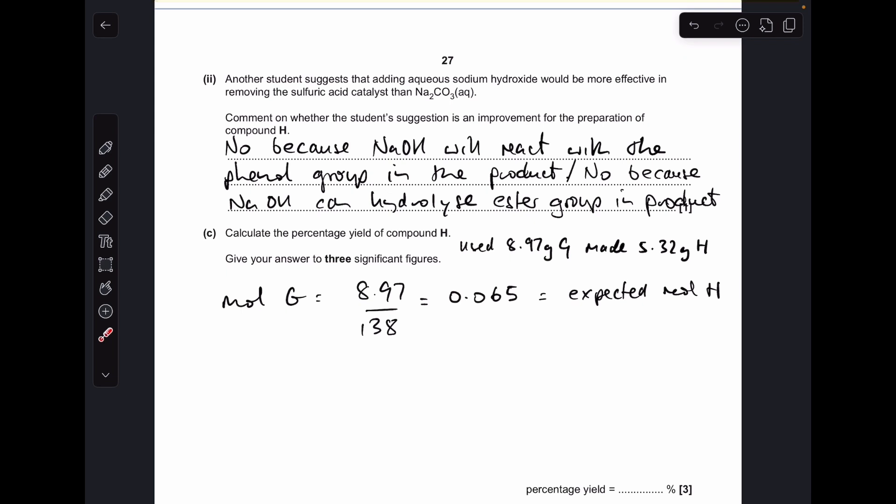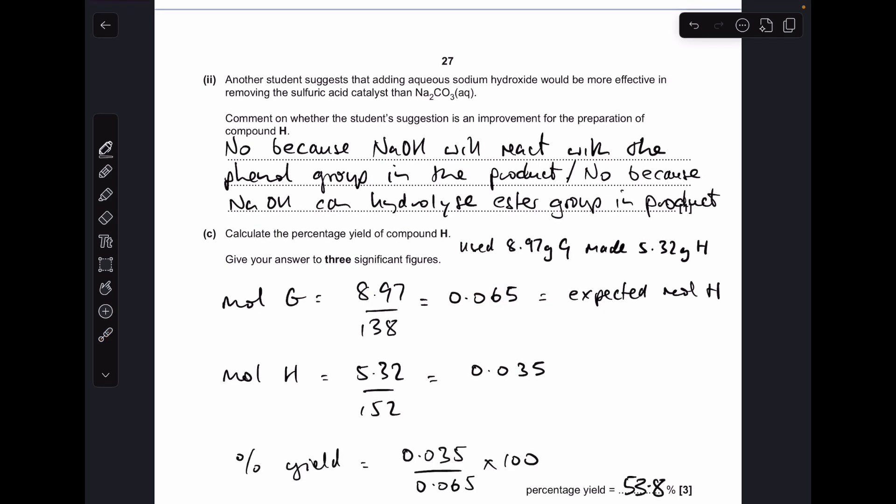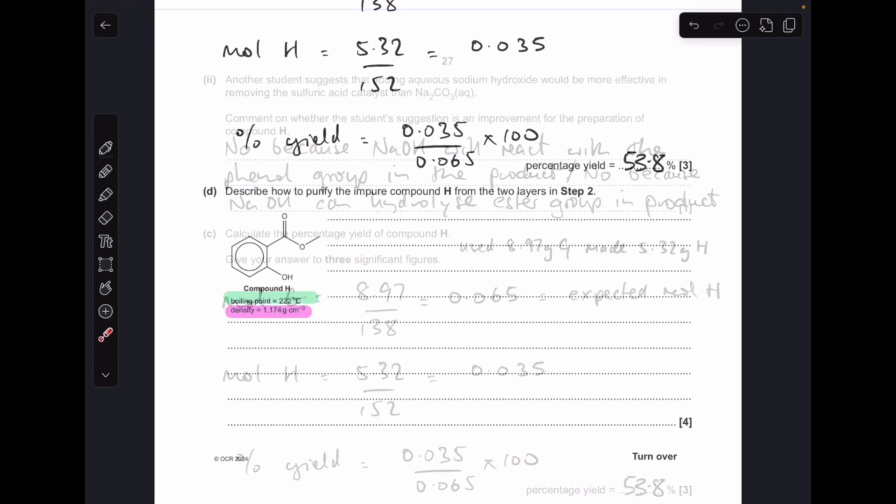Now we'll calculate how many moles of H they actually made. Mass over MR again gives 0.035 moles of H. Percentage yield is actual over expected times 100, which comes out at 53.8%.